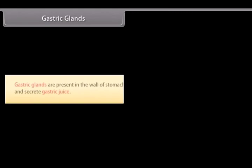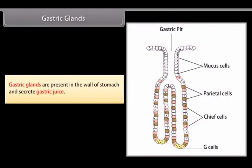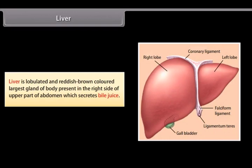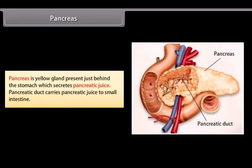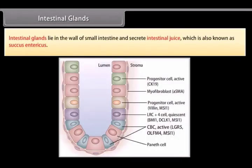Gastric glands are present in the wall of the stomach and secrete gastric juices. The liver is a lobulated, reddish-brown colored, largest gland of the body, present on the right side of the upper part of the abdomen, and it secretes bile juice. The pancreas is a yellow gland present just behind the stomach which secretes pancreatic juice; the pancreatic duct carries pancreatic juice to the small intestine. Intestinal glands lie in the wall of the small intestine and secrete intestinal juice, also known as succus entericus.